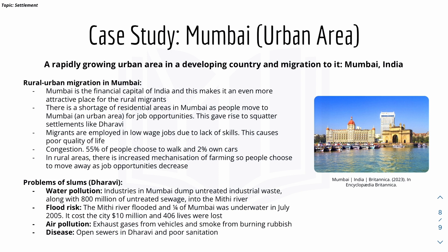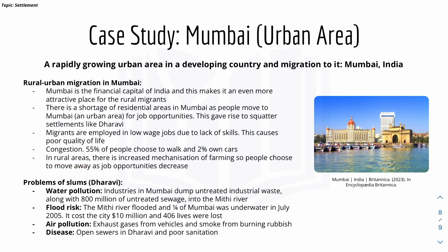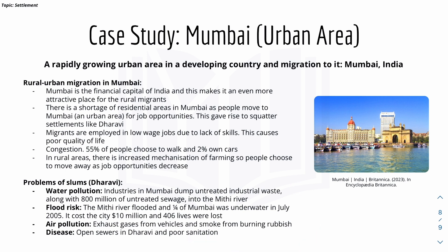The problems of slums and squatter settlements in Dharavi include: water pollution, as industries dump untreated industrial waste along with untreated sewage into the Mithi River; flood risk, as the river once flooded and a quarter of Mumbai was underwater in July 2005, costing the city $10 million and many lives; air pollution from exhaust gases from vehicles and smoke from burning rubbish; and disease, due to open sewers and poor sanitation in Dharavi, leading to decreased quality of life.